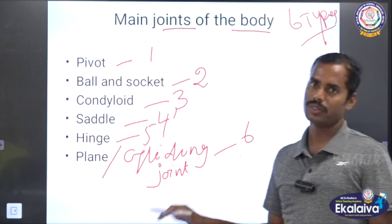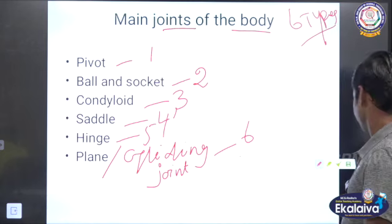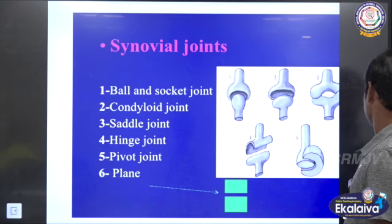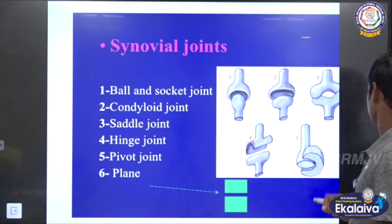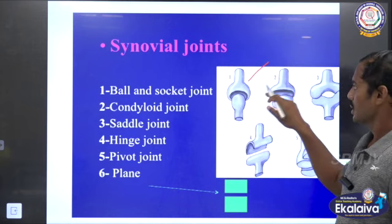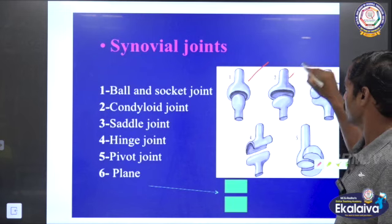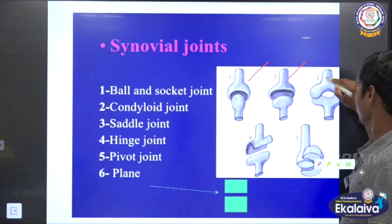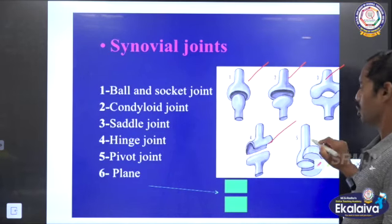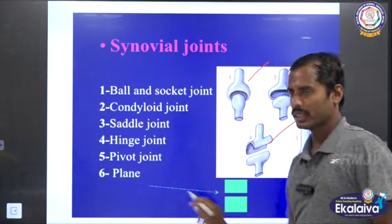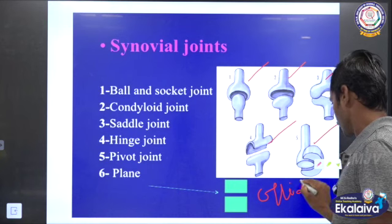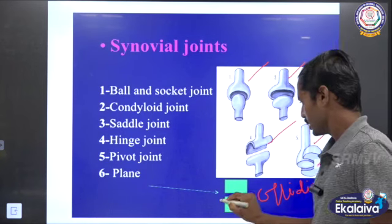The six types of joints for the human body. First one is ball and socket. Second one is condyloid. Third one is saddle joint. Fourth one is hinge joint. Fifth one is pivot joint. The last one is plane joint or gliding joint. This is the sixth one.